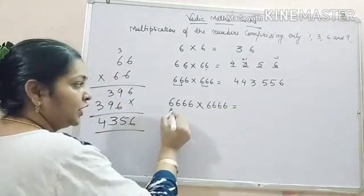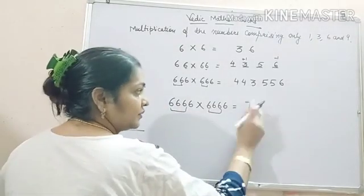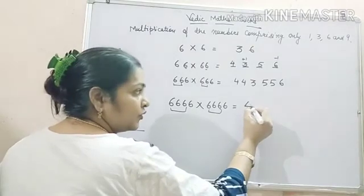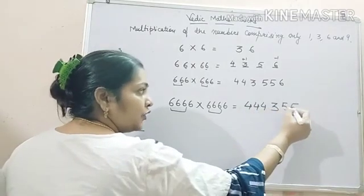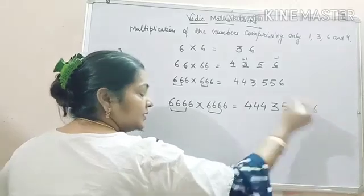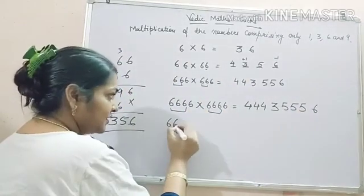What you will do? For these 3 sixes, write what you will write? 4444, then 3, 5555, then 6. So easy it is.